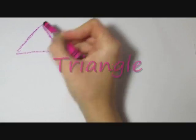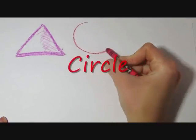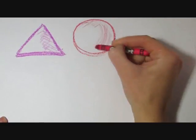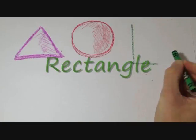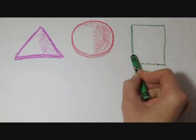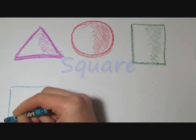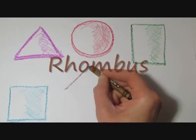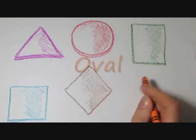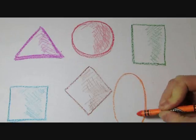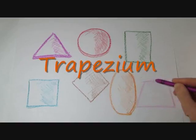Triangle. Circle. Rectangle. Square. Rhombus. Oval. Trapezium.